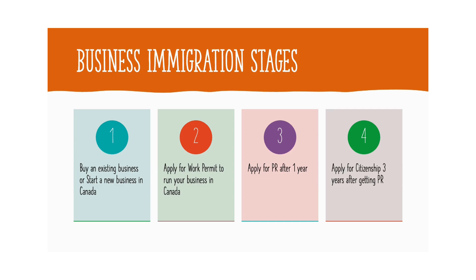Now here are the four stages of business immigration. This is a general guideline that applies to any business or investor program you choose to apply to. First is to buy an existing business or start a new business in Canada. Second step is to apply for a work permit to operate and grow your business. You then apply for your permanent residency after one year of running your business, and three years after becoming a PR, you apply for your citizenship.